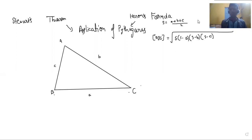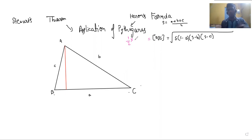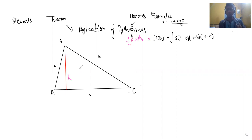Why does it seem difficult? Because it's a big formula, but how can we get started? It's all about expressing area in terms of side lengths. We know the area of a triangle is half into base into height. If I take this as the base, the height I'm going to call h_a.